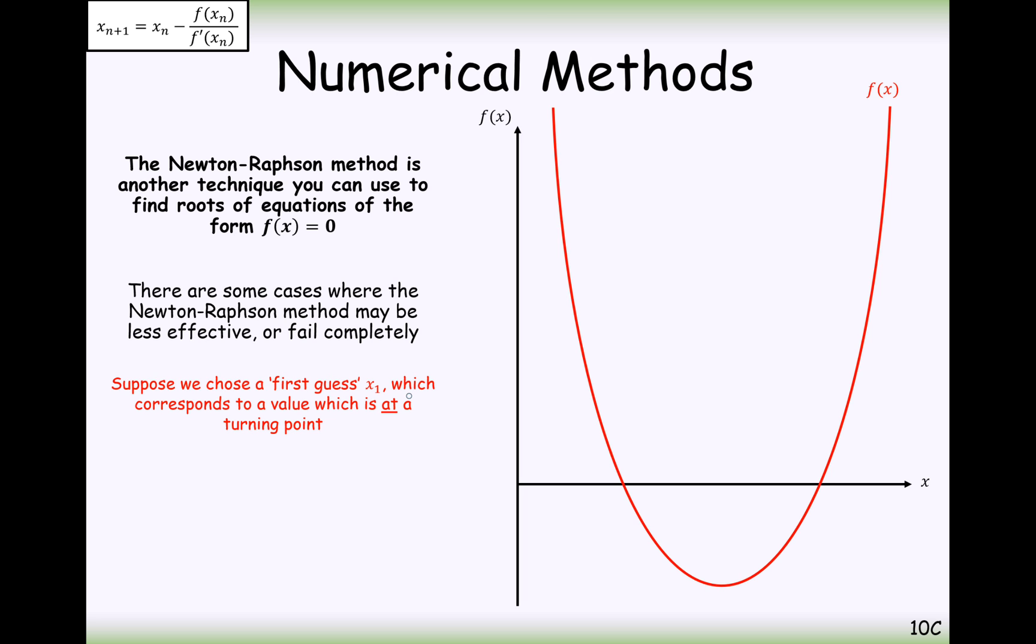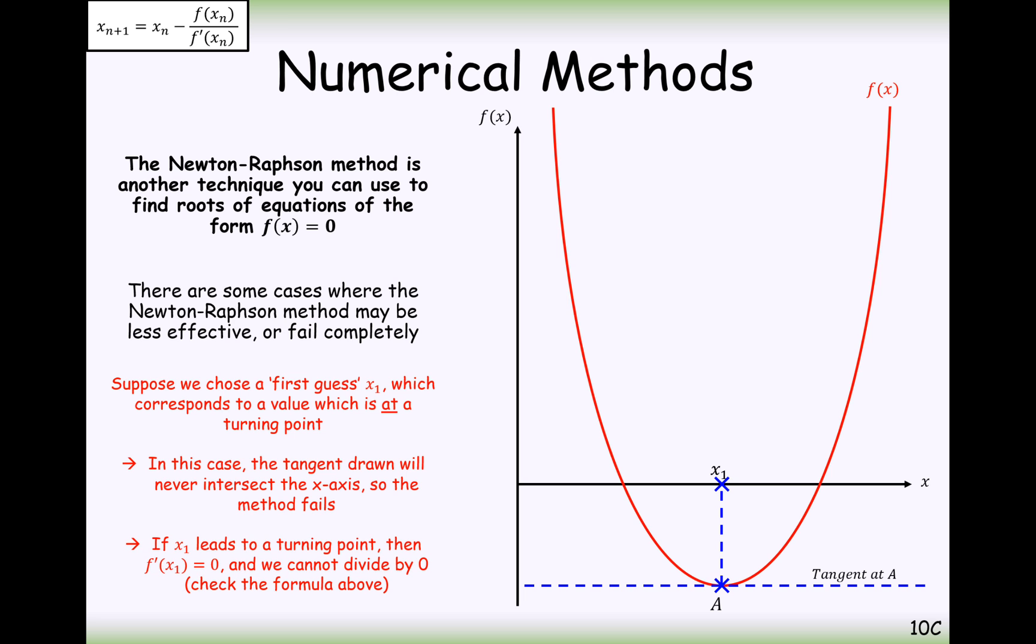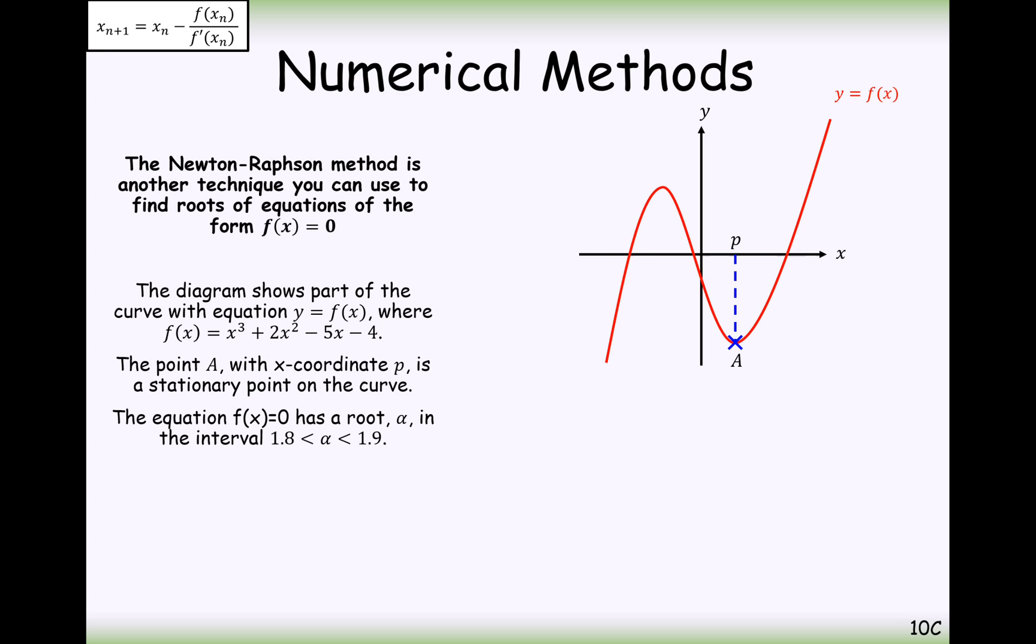Suppose that our first guess, x₁, which corresponds to was at the turning points now. Now, in this case here, the tangent here would be a horizontal line and it would never intersect the x-axis again. So in this case here, it would just completely fail this method. So we're going to be approximating solutions to these types of curves here. You would think that if you were able to differentiate it, you'd be able to solve the equation equal to zero. But this is what we're going to be doing anyway.